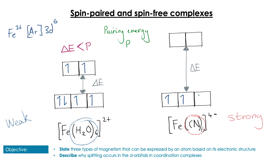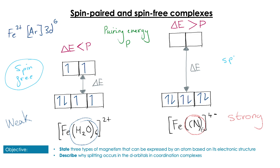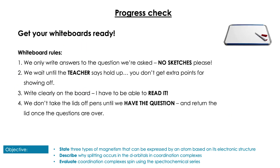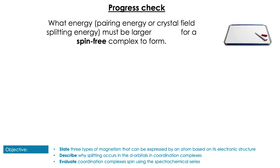On the left we have a spin-free complex because more electrons are free to move to the upper orbitals, and on the right we have a spin-paired complex because we preferentially pair the electrons in the t2g orbitals.